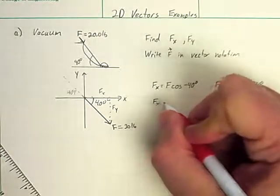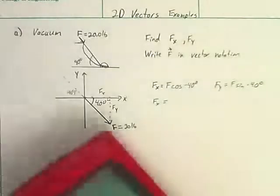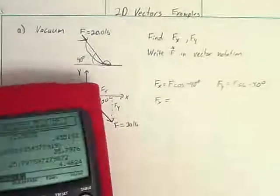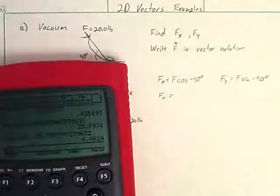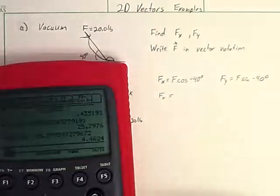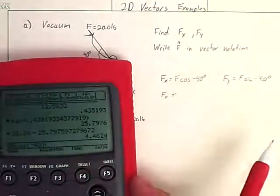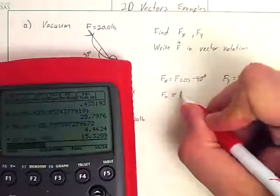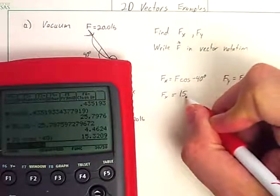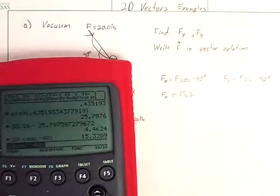So Fx is, if I grab my calculator, of course F is 20. So 20 times cosine negative 40. Again, make sure your calculator is in degrees. I get 15.3 for that direction.